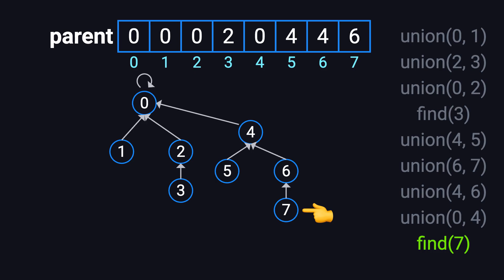At this point, if we call find(7), the system will trace 7's parent to 6, 6's parent to 4, 4's parent to 0, and since 0's parent is itself, it returns 0. Meaning that the representative of 7's group is 0.